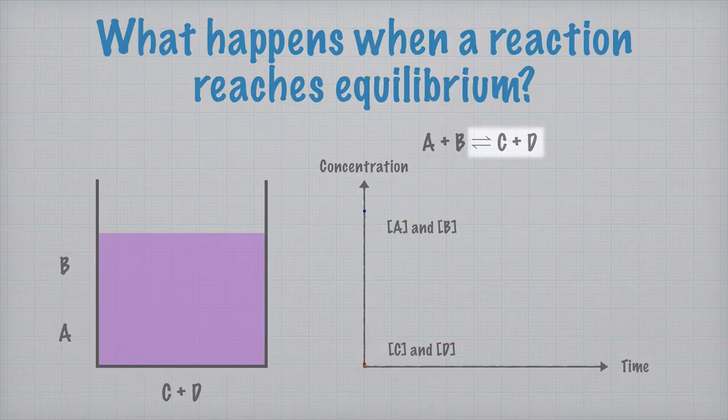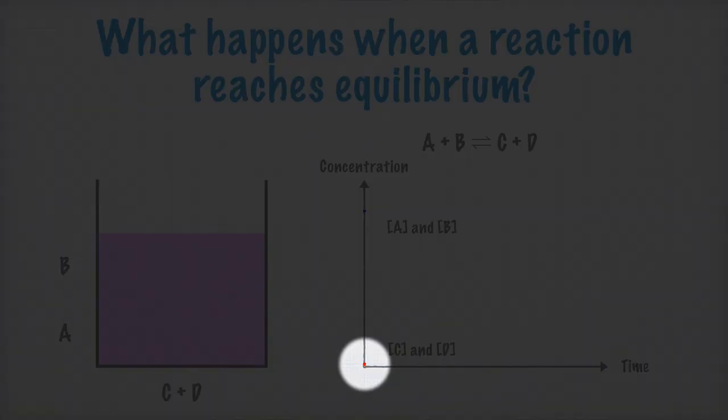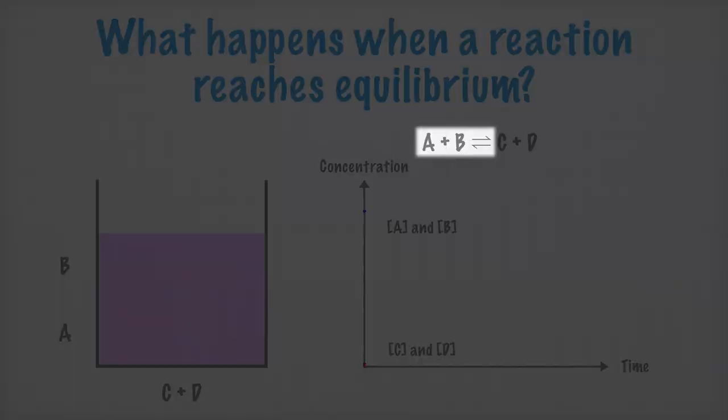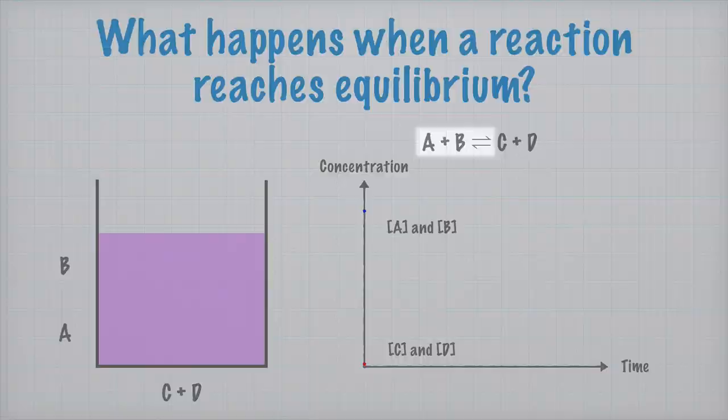That means that the reaction rate to the right is quite large. Right at the beginning of the reaction, the concentrations of C and D, that I have drawn in red, are zero. Because of this, the reaction rate to the left is, of course, also zero.